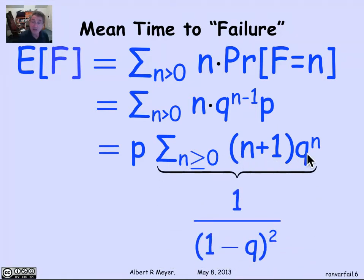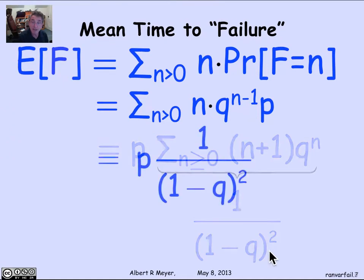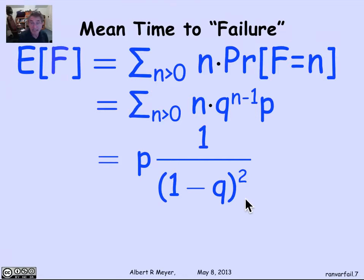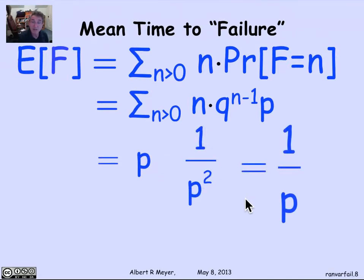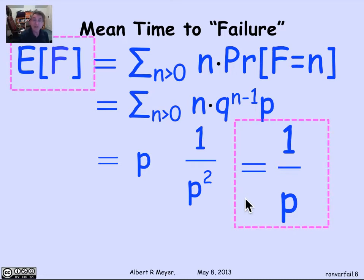Now, this is a familiar generating function. It's simply equal to 1 over 1 minus Q squared, as we've seen already. So in short, the expectation of F is P times 1 over the square of 1 minus Q. So let's pull them together there. Of course, 1 minus Q is P, so it's P times 1 over P squared, or 1 over P. And we get this really very clean answer. The expected number of flips before you get a head is 1 over the probability of a head. So for example, with a fair coin where P is a half, the expected number of flips until you get the first head is 2. It's 1 over a half. If you had a biased coin where the probability of getting a head was 1 third, then the expected number of flips until you got a head was 3.